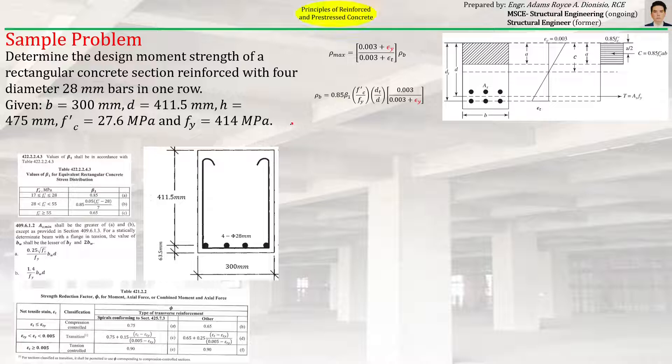For this problem, we are being tasked to analyze and compute for the design moment strength, which is equal to φMn. We need to compute φMn for this given section, a singly reinforced section with one row of reinforcement.